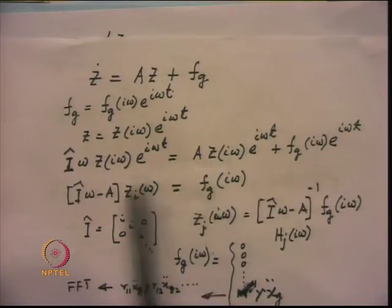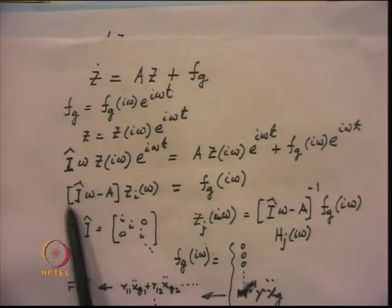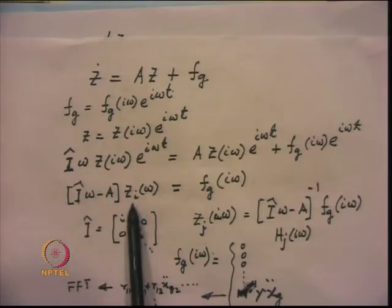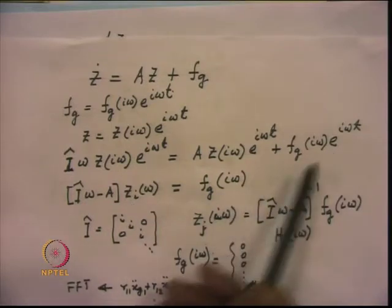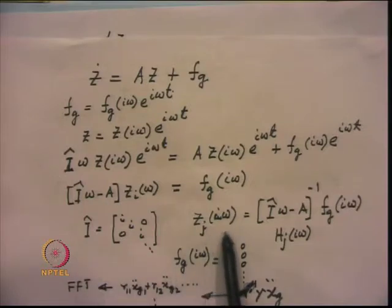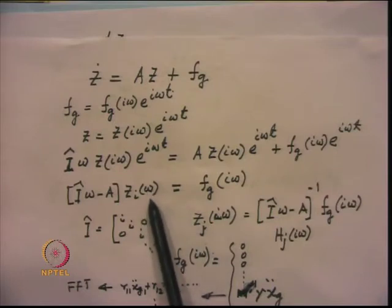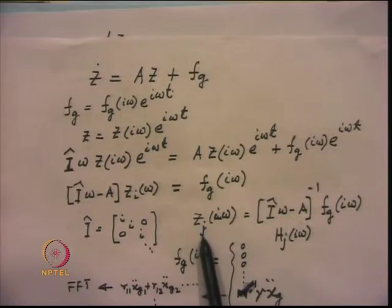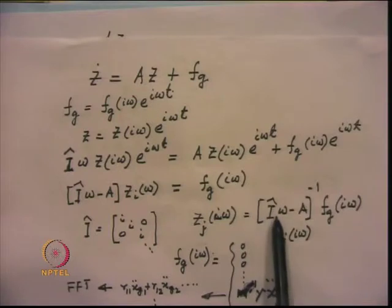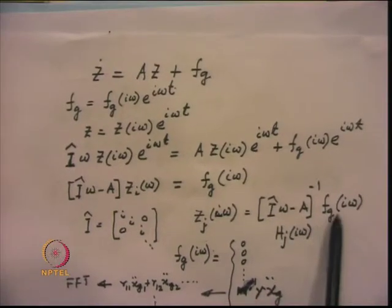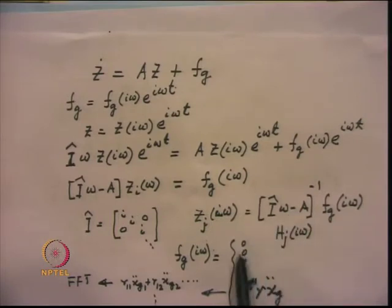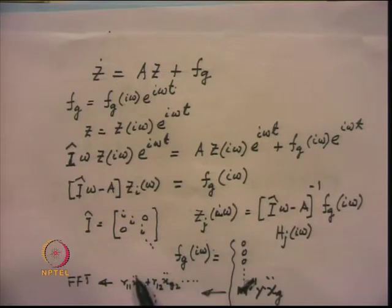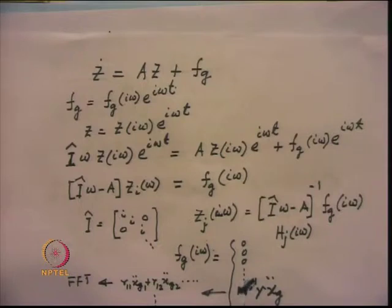For the j-th frequency, we can write z_j(iω) = [iω̂ - A]⁻¹ · f_g(iω), and this inverse is called H_j(iω), the frequency response function for the j-th frequency. The vector f_g(iω) is obtained from the FFT algorithm. The individual elements of this vector involve terms like r₁₁·ẍ_g1 + r₁₂·ẍ_g2, and so on, corresponding to the R matrix entries multiplied by the support ground accelerations.